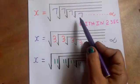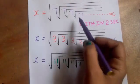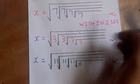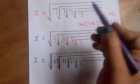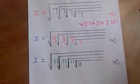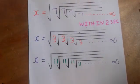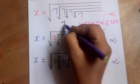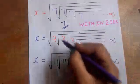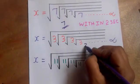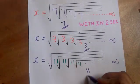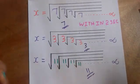You will see this model sum. This model sum is 7. This model sum is 3. This model sum is 11.